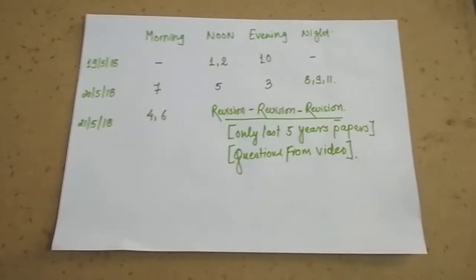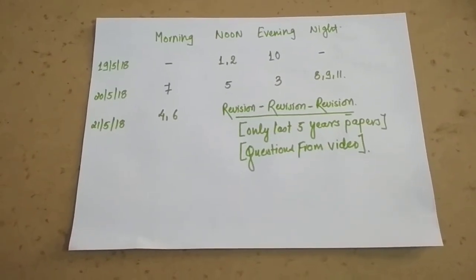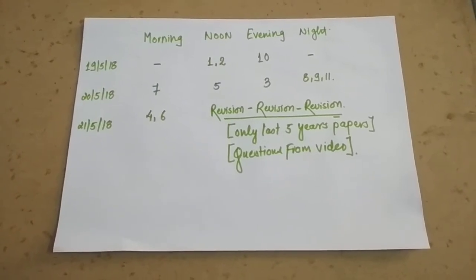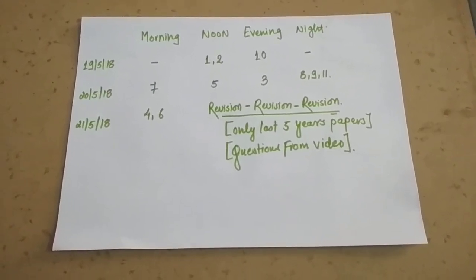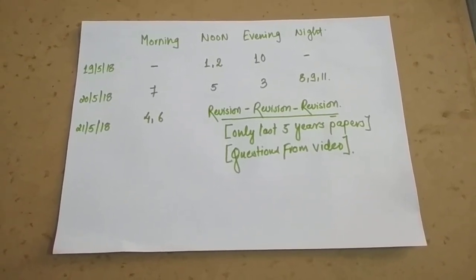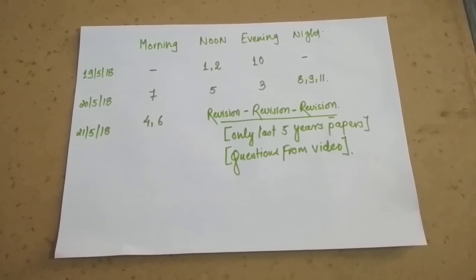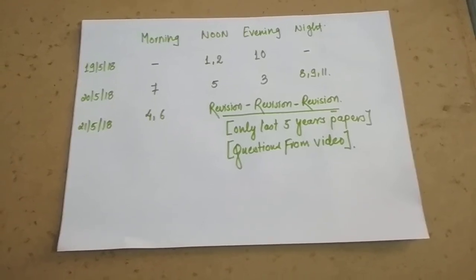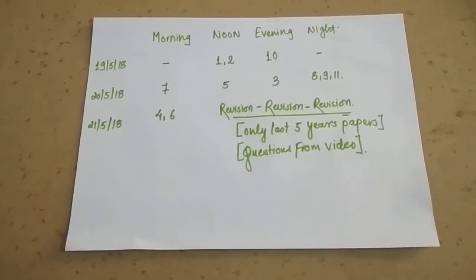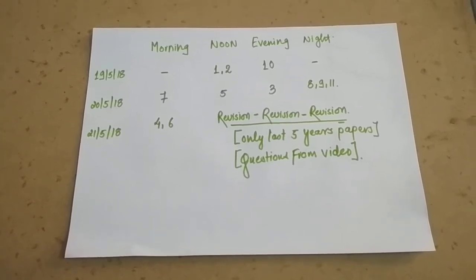How to plan? There are 19th, 20th, and 21st, almost three days for fluid mechanics. If we consider from 19th noon, you can do first and second modules in the noon, 10th module in the evening. In the 20th morning, you can do seventh chapter; it will take around three to four hours minimum. In the noon, you can do fifth one; in the evening, you can do third one.